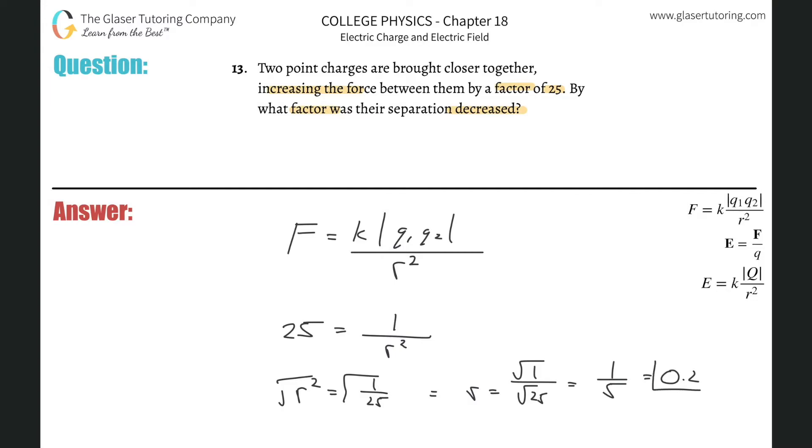So what does this mean? It says what factor was their separation decreased by. You can give the decimal value if you want, or you can give this fraction. The fraction might make a little more sense - their separation was decreased to 1/5 of the original.